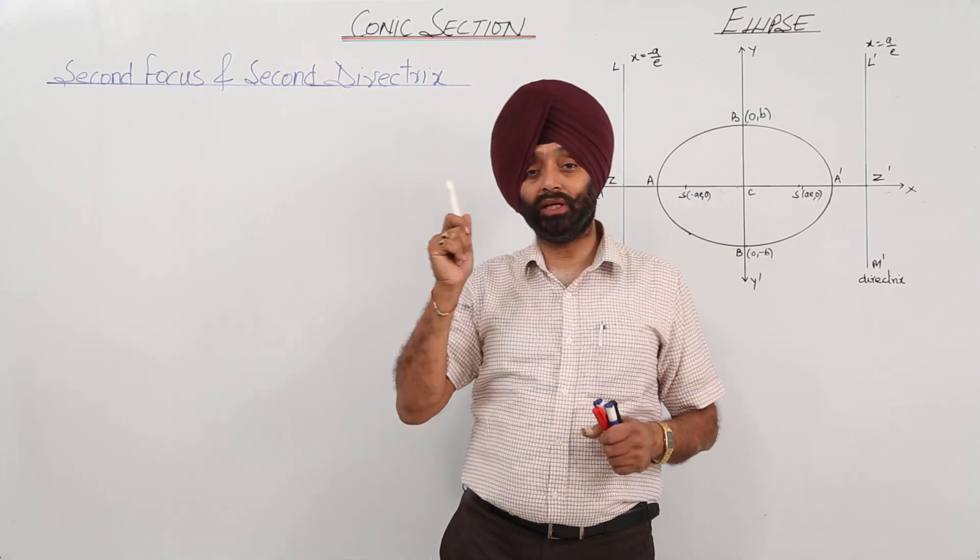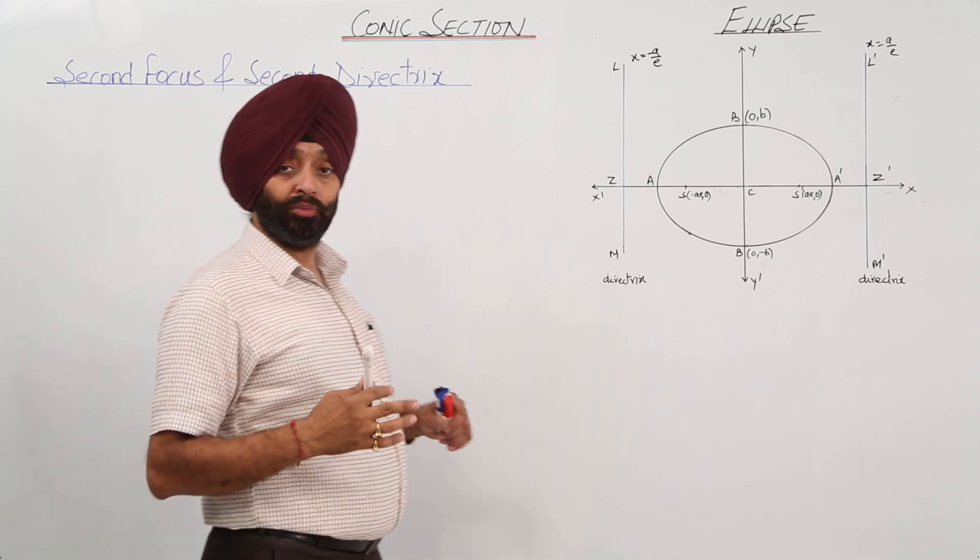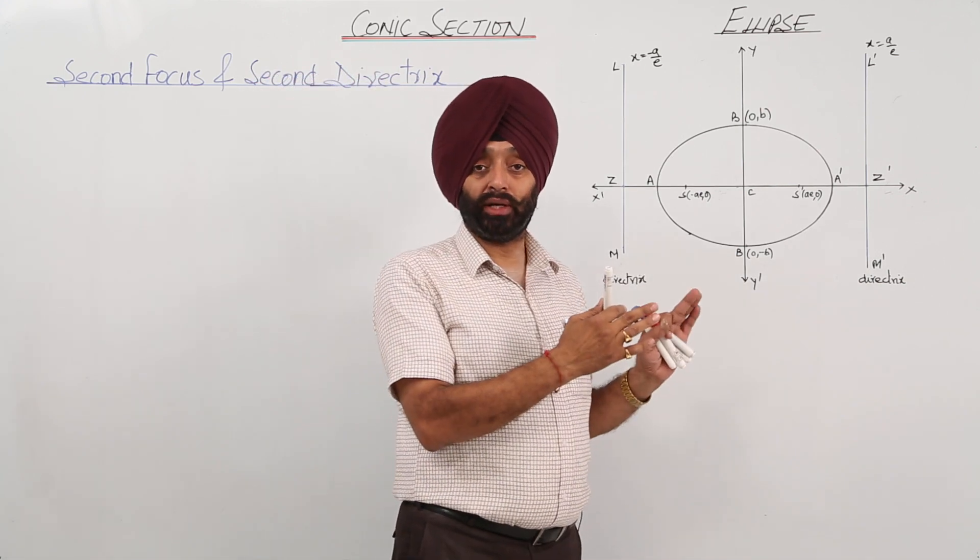Second focus and second directrix. Now basically what this means? In an ellipse we are having 2 focus and 2 directrix.